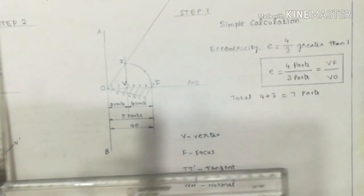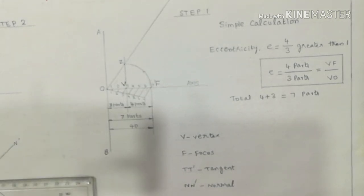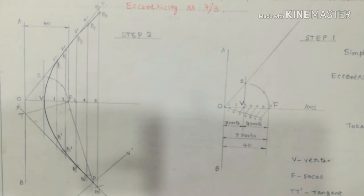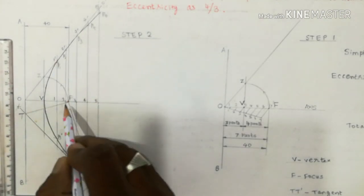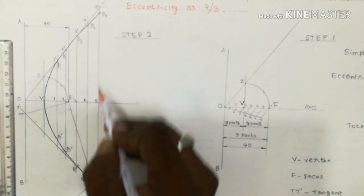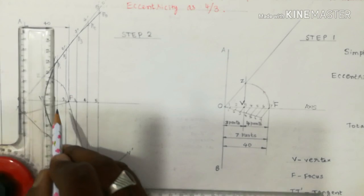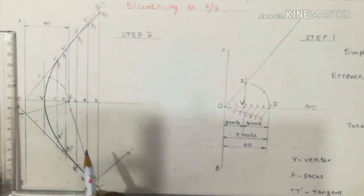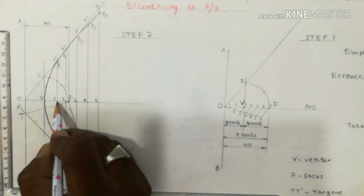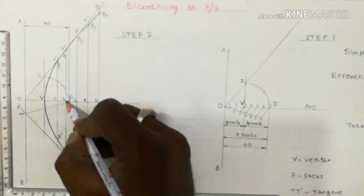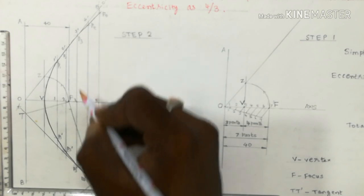Step two: draw several vertical lines for plotting the hyperbola. For example, vertical lines at positions 1–1', 2–2', 3–3', 4–4', 5–5'. The gap between vertical lines can be equal or unequal. On each vertical line, mark where it meets the axis of the hyperbola as points 1, 2, 3, 4, 5, and where it meets the OZ line as points 1', 2', 3', 4', 5'.